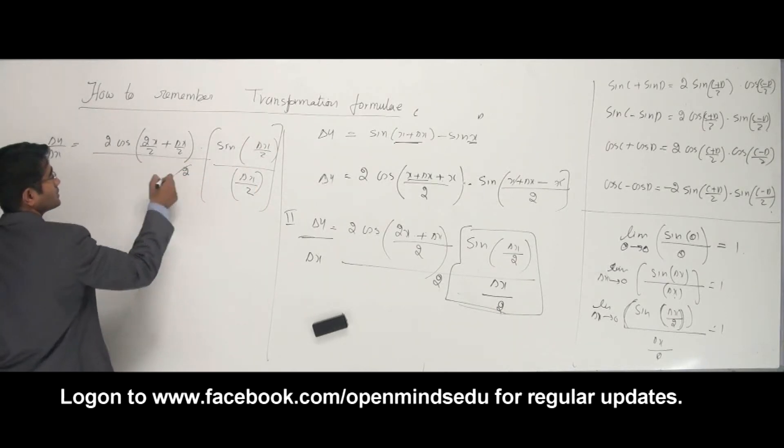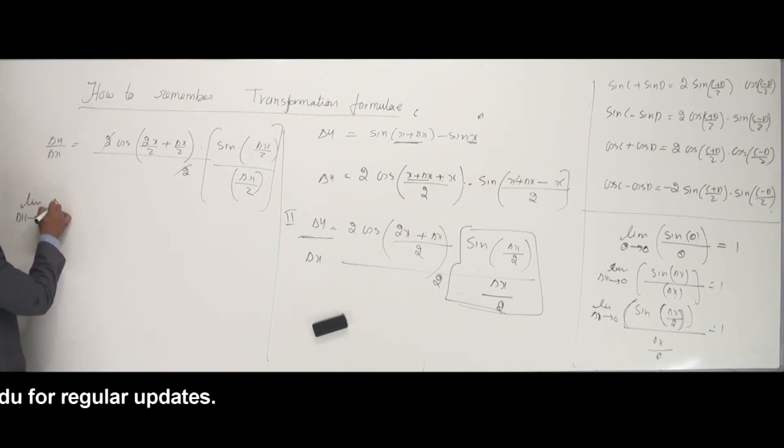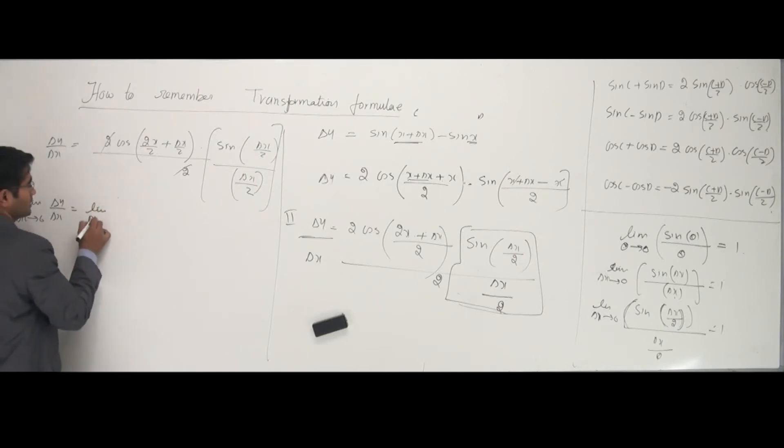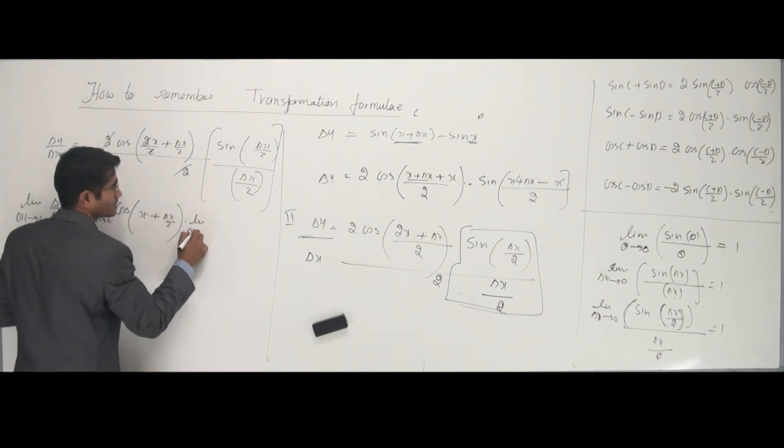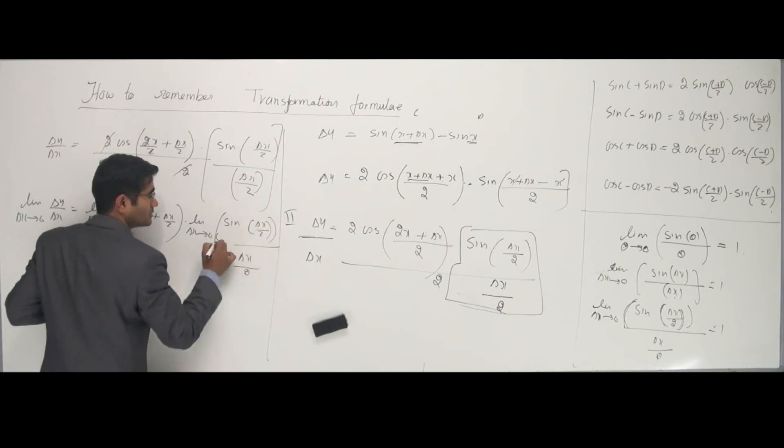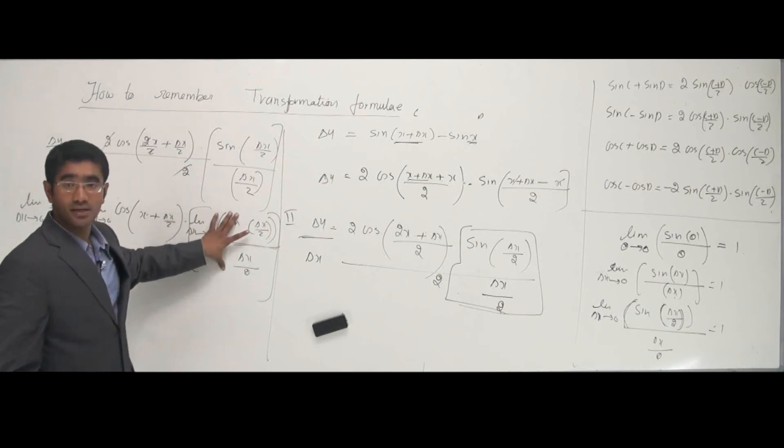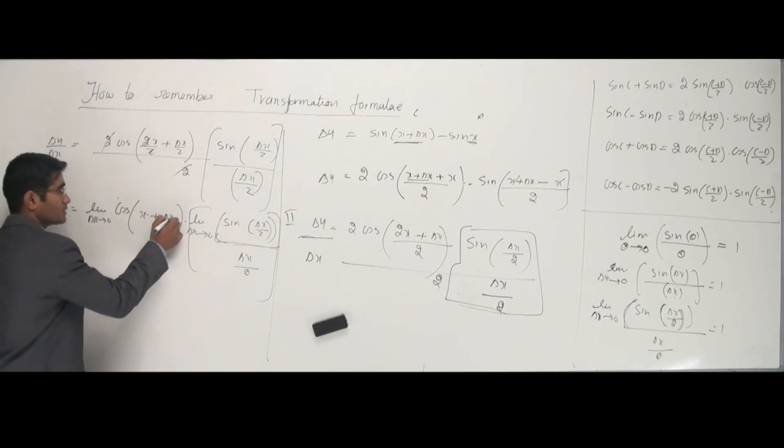So, limit of delta x tends to 0. I have delta y by delta x. Limit of delta x tends to 0 cos of x plus delta x by 2 into limit of delta x tends to 0, sine delta x by 2, the whole thing divided by delta x by 2. Now, this guy, is this not looking like the formula which we just discussed? Yes. This can be written as 1. And in this case, where do you find delta x? Put a 0 here.